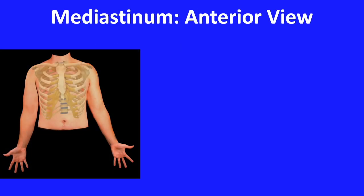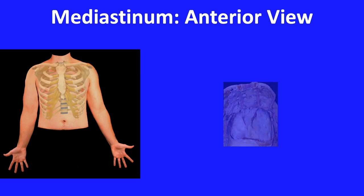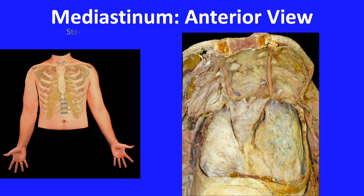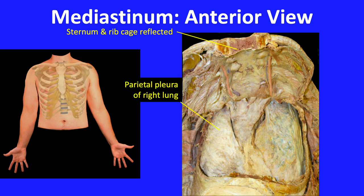In the image, we see the torso of an individual in the anatomical position with a thoracic cage superimposed. If the thoracic cage is dissected away, this is what we see. The sternum and rib cage were cut and reflected upwards. The right lung with its surrounding parietal pleura is clearly visible, as is the left lung and its parietal pleura.